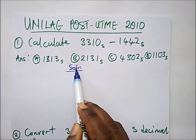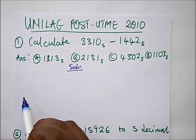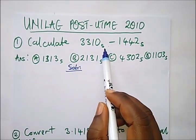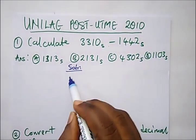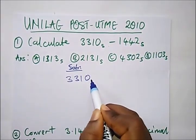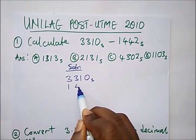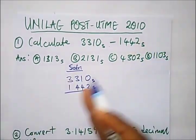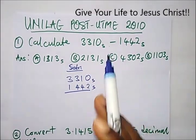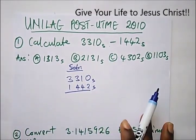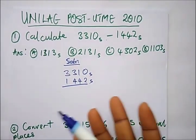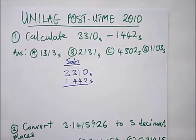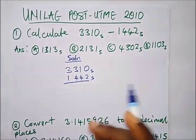There's no more time to prepare for this exam, so let's go on to the questions. We have Unilag from 2010. The first question says: calculate 3310 base 5 minus 1442 base 5. Normally Unilag questions are 15 maths, 15 English, and 15 general knowledge, but this particular year has 40 questions on maths, which is why I'm picking this year.